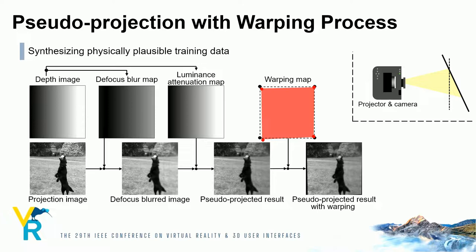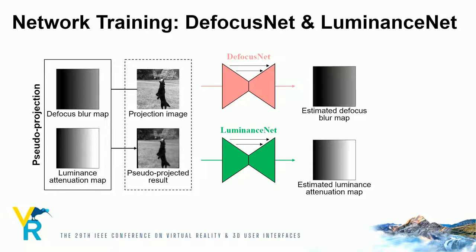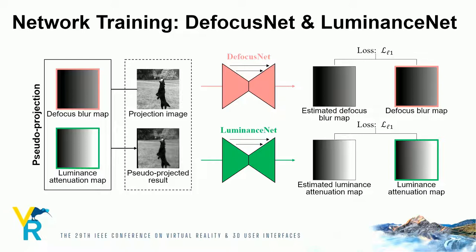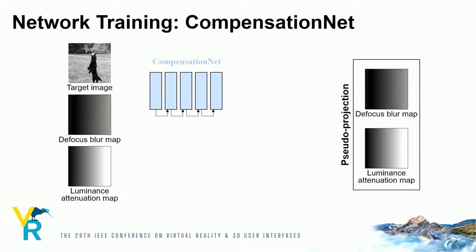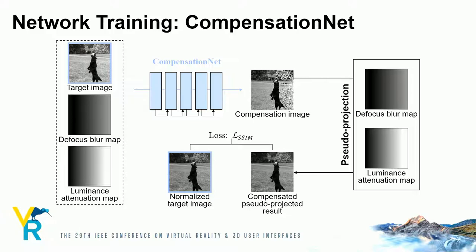We explain how to learn the defocus net and luminance net. After pseudo-projecting the projection image, each network estimates the map from these images. We then calculate the loss between the estimated map and the true value map used for pseudo-projection. The compensation net generates a compensation image from the target image and two maps. We then calculate the loss between the compensated pseudo-projected result and the target image whose luminance is normalized according to the pseudo-projection.